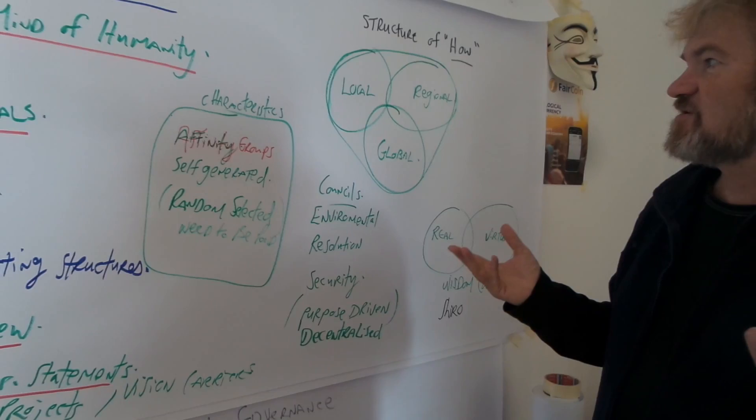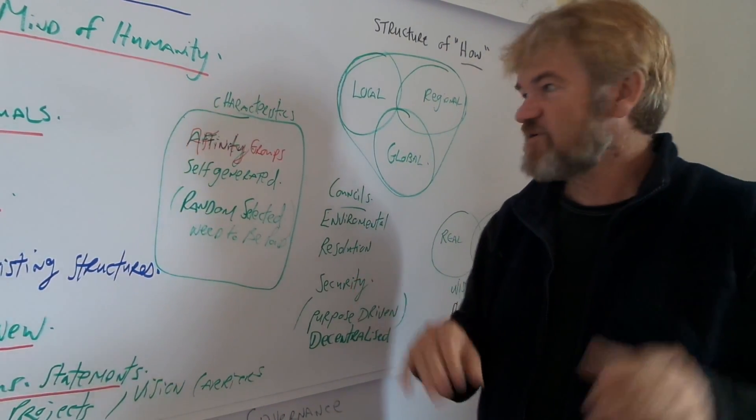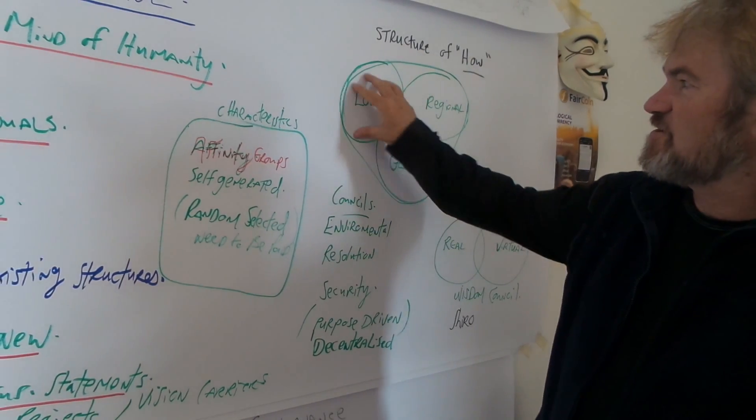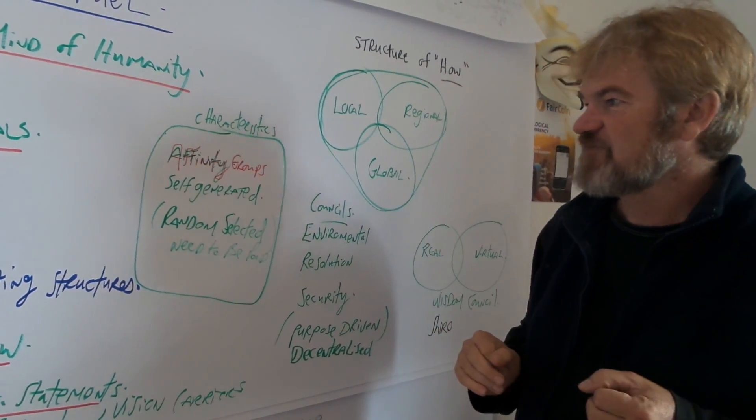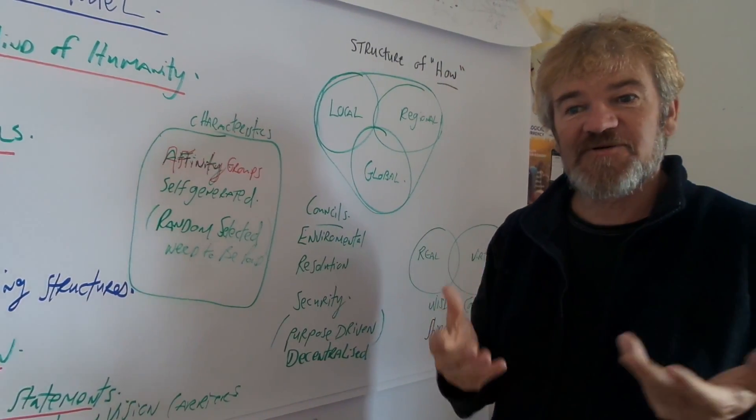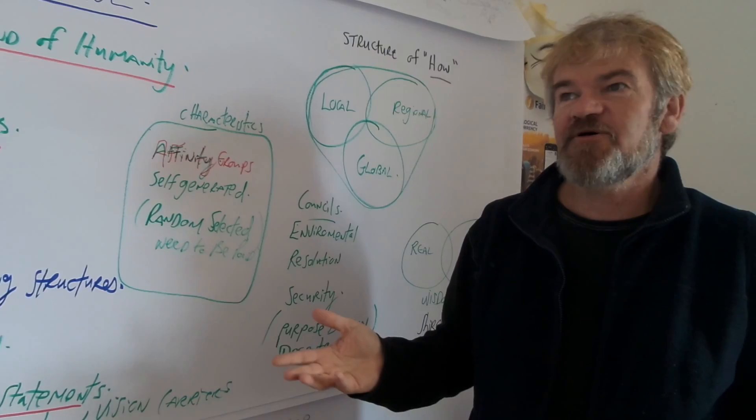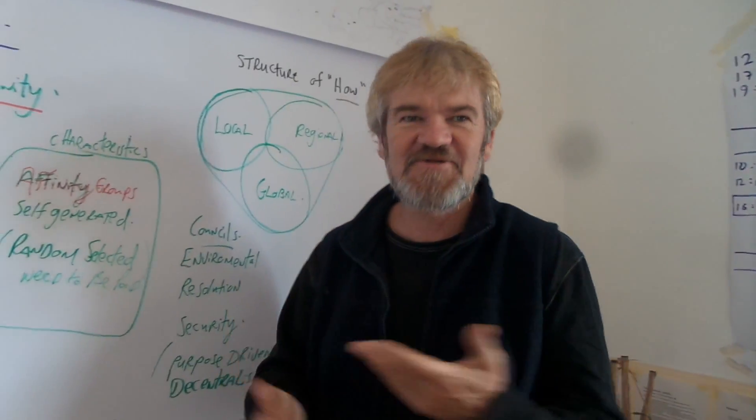So how does it work, this mycelium model? What's the nuts and bolts of it? On the local level, you create affinity groups which are self-generated. People have a problem. We don't have clean water, for example. We have to figure out how to make clean water.